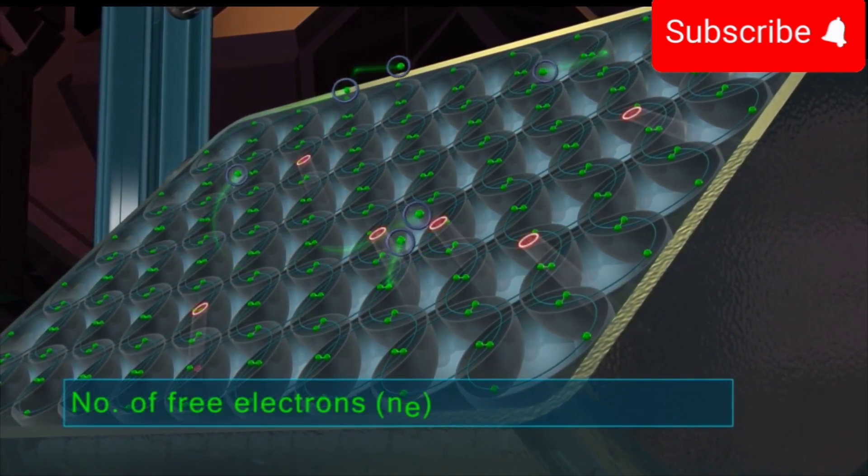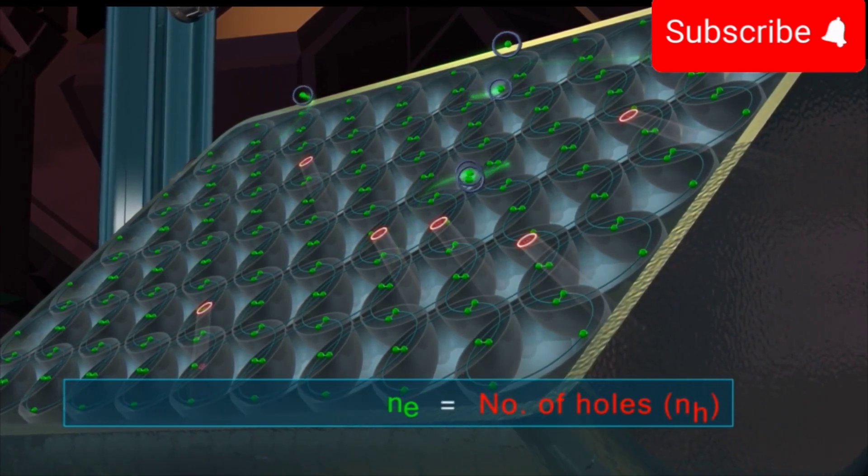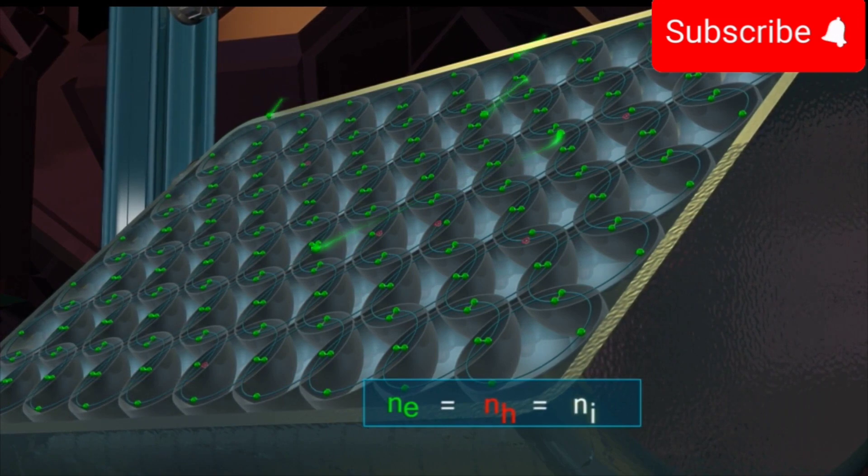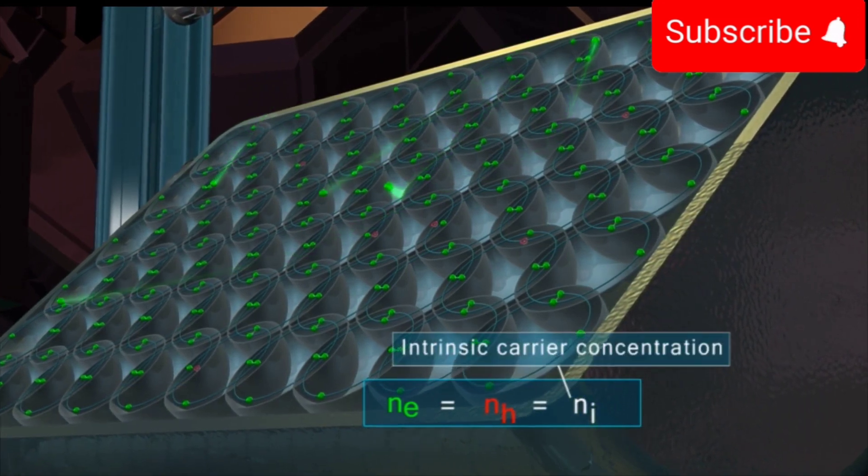Here, the number of free electrons (Ne) equals the number of holes (Nh). That is, Ne = Nh = Ni, where Ni is known as intrinsic carrier concentration.